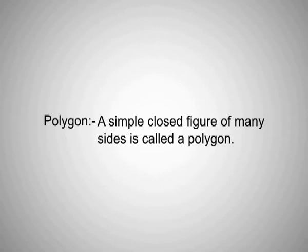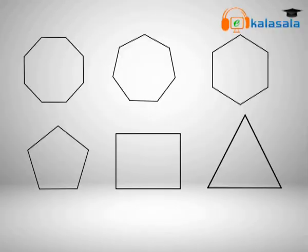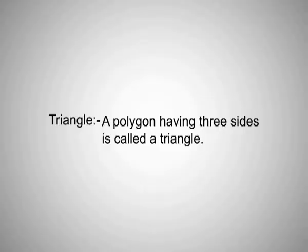Next, polygon. A simple closed figure having many sides is called a polygon. For example, polygons with eight sides, seven sides, six sides, five sides, four sides, and three sides. The last one — a polygon with three sides — is a triangle.